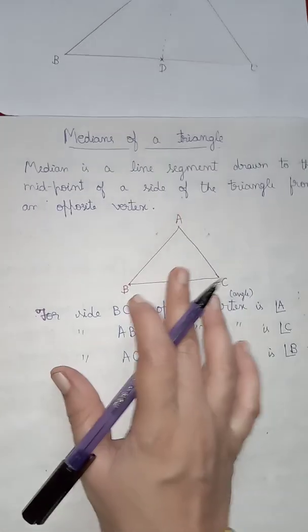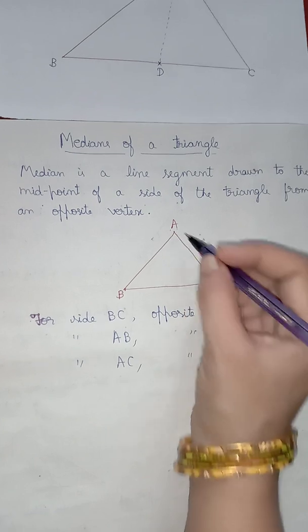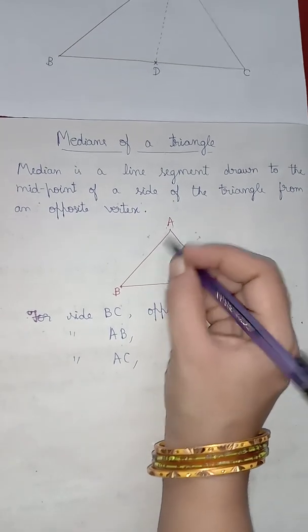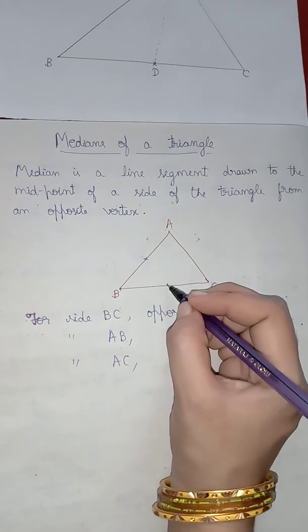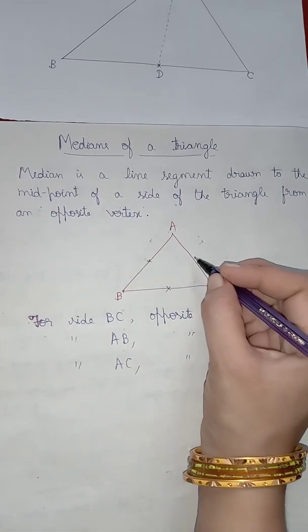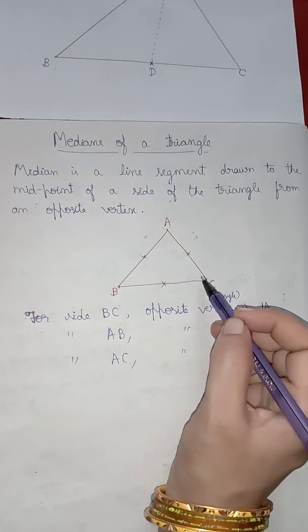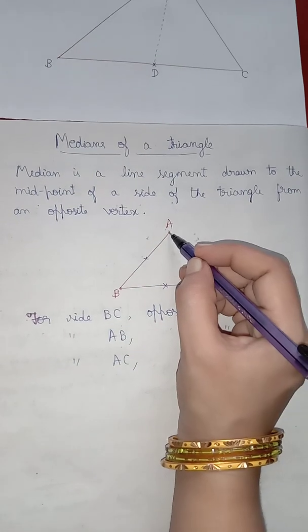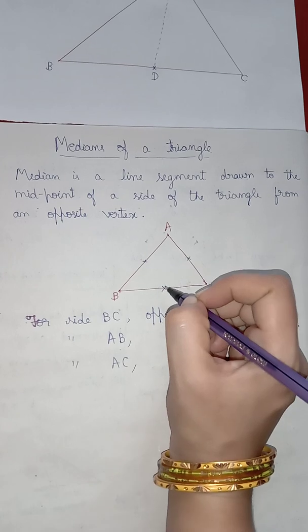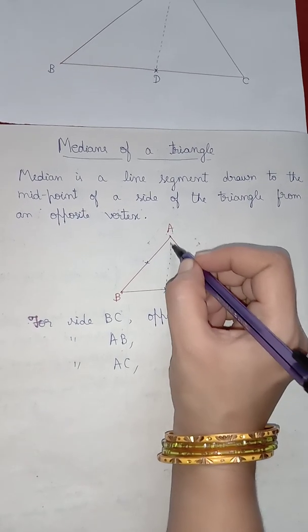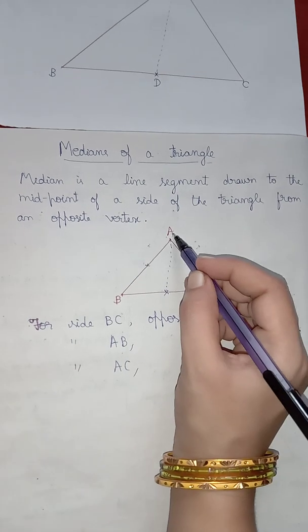Now, median means a line. If you mark midpoints of all these three lines, see, A, B you have midpoint, B, C you have midpoint, A, C you have midpoint. Now, median to line B, C will be line joining midpoint of B, C to opposite vertex. So, that will be A.